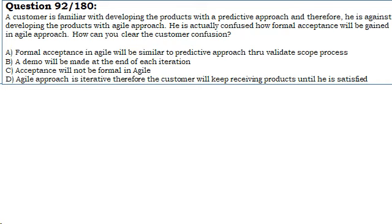A. Formal acceptance in Agile will be similar to predictive approach through validate scope process. B. A demo will be made at the end of each iteration. C. Acceptance will not be formal in Agile. D. Agile approach is iterative therefore the customer will keep receiving products until he is satisfied.